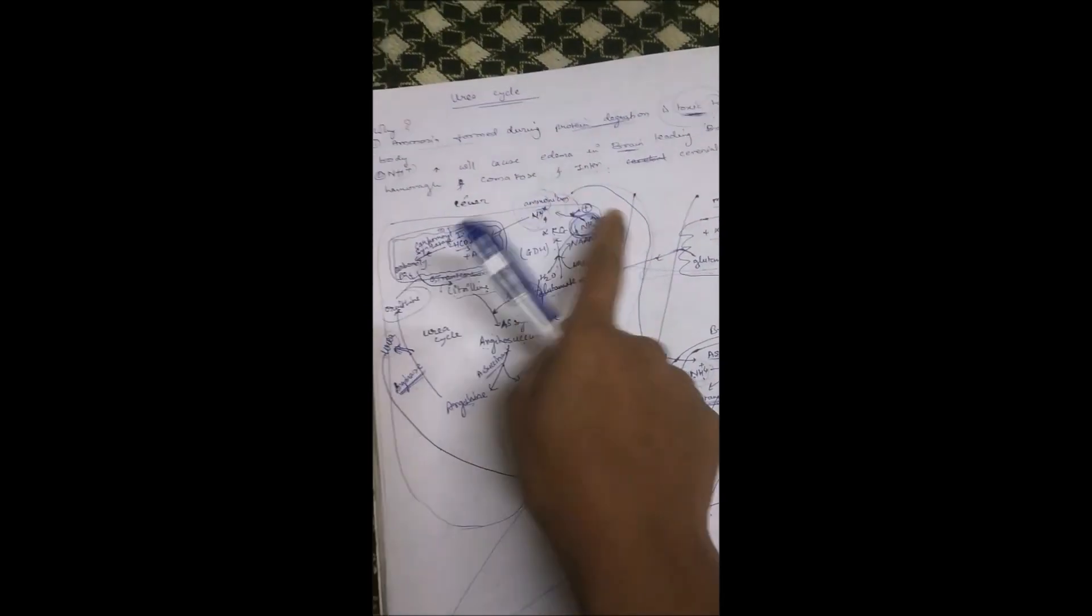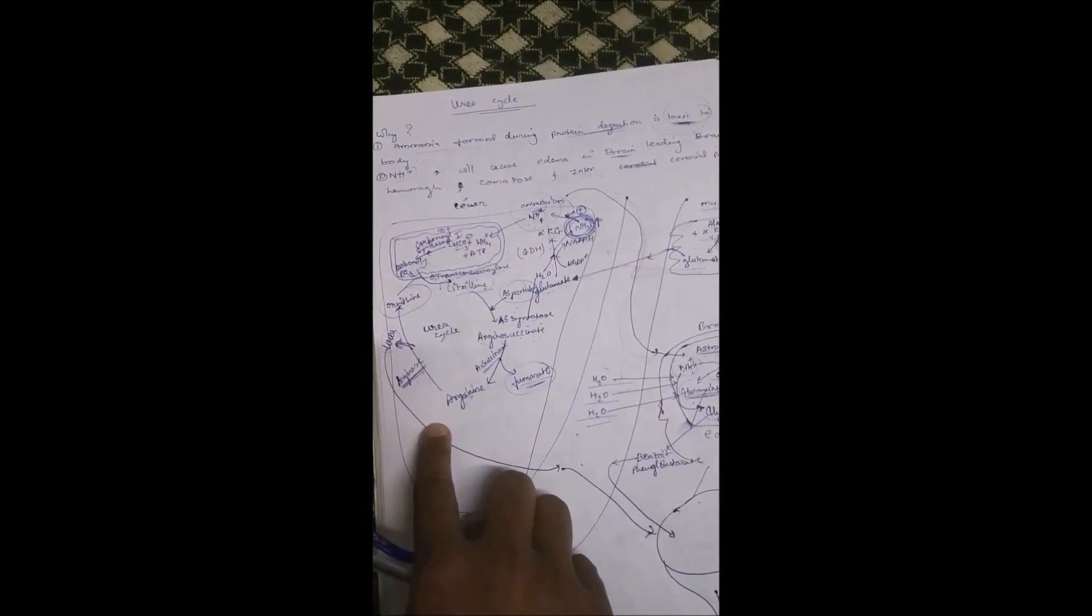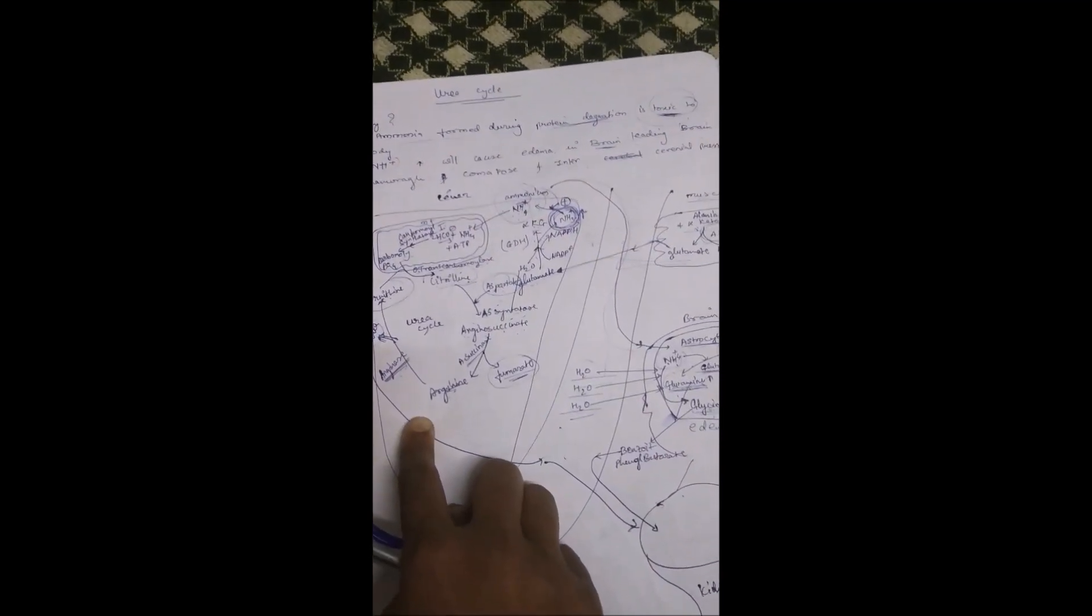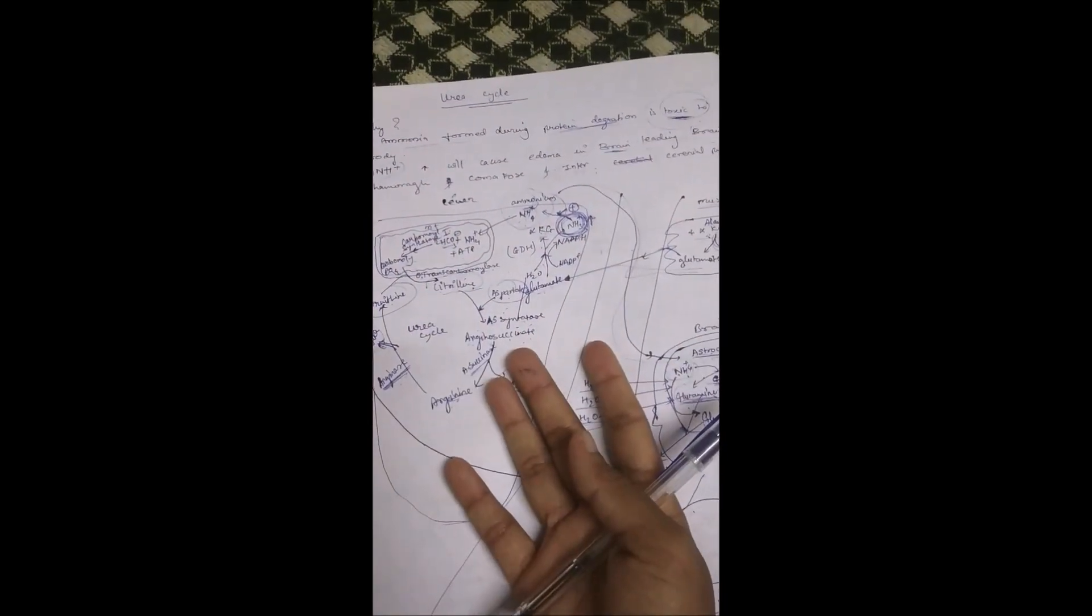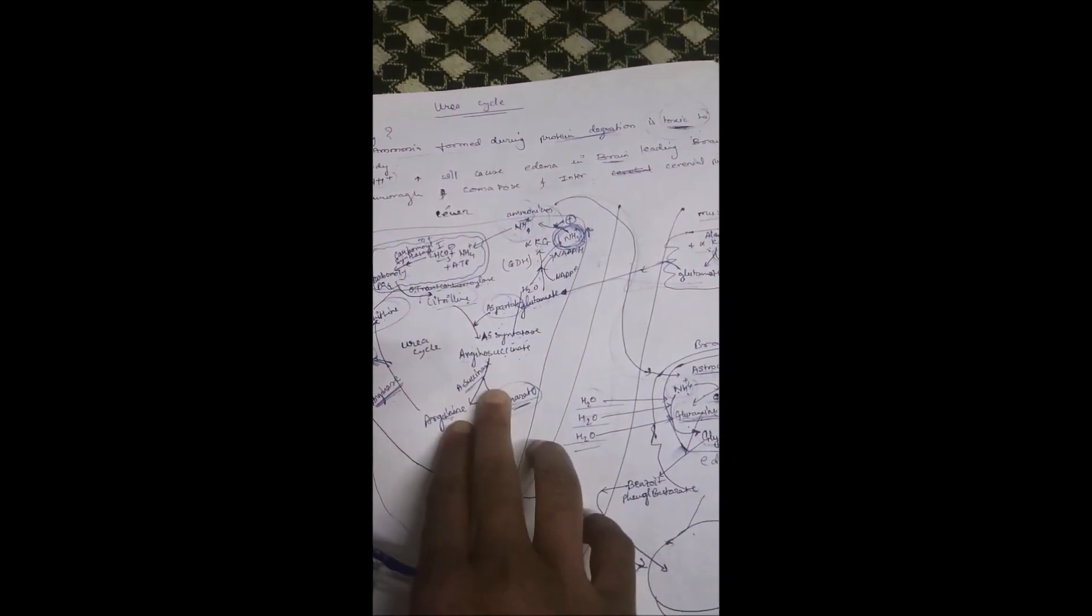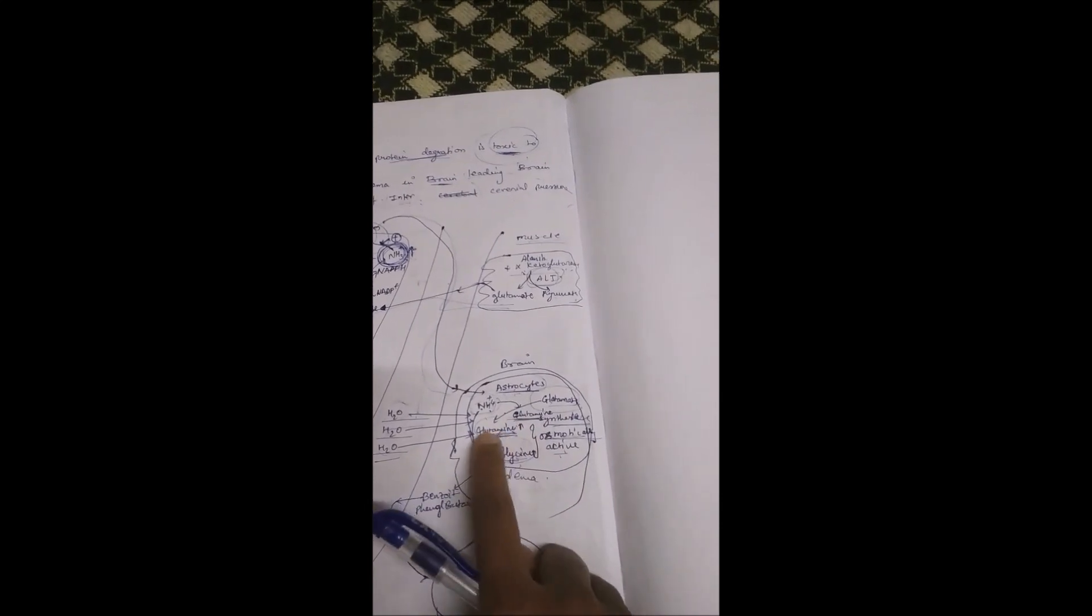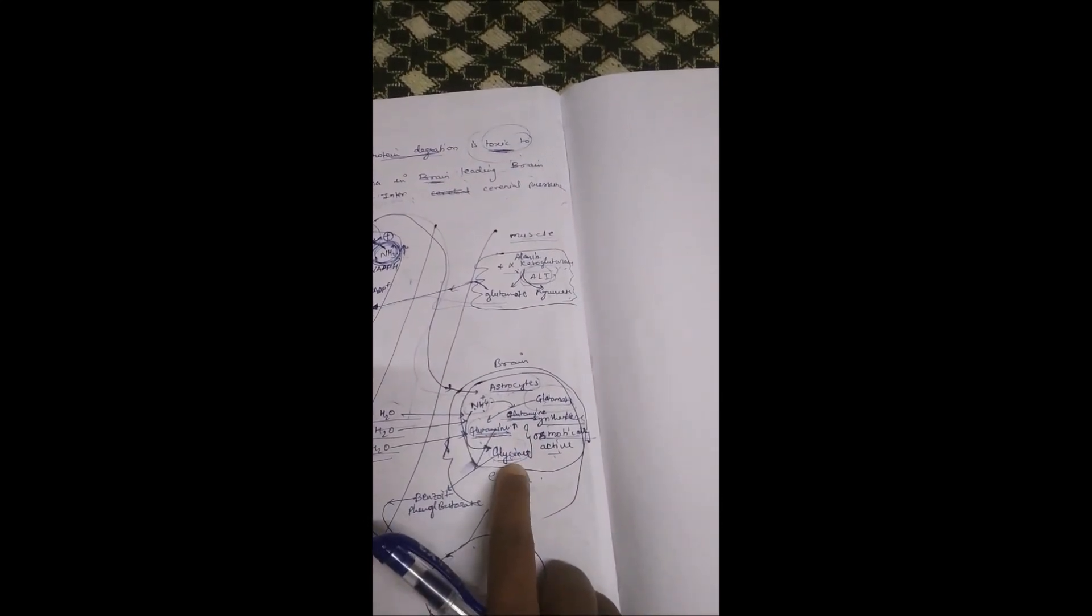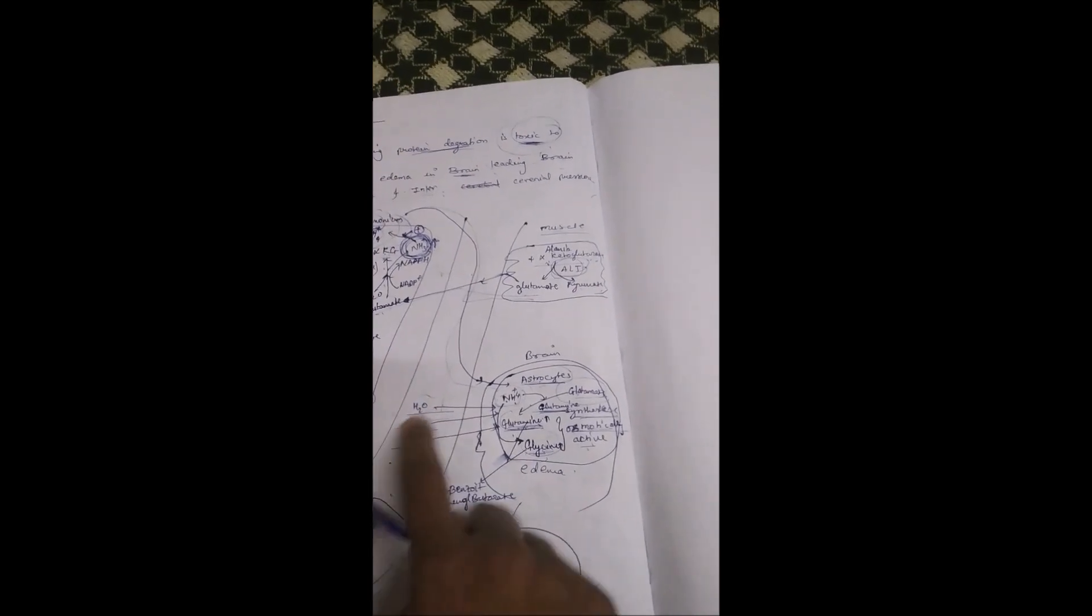If a person's liver is damaged, the urea cycle won't take place. Now there is toxicity present in the brain cell. We need to remove this glutamine and glycine. If we don't remove these two molecules, all this water will get inserted into the brain and the brain will die.